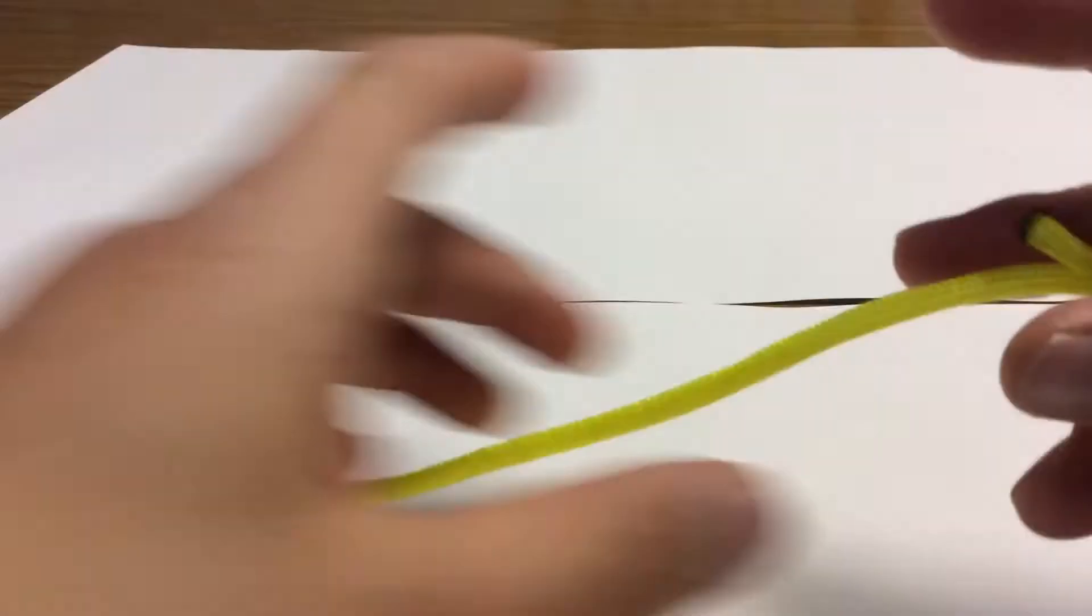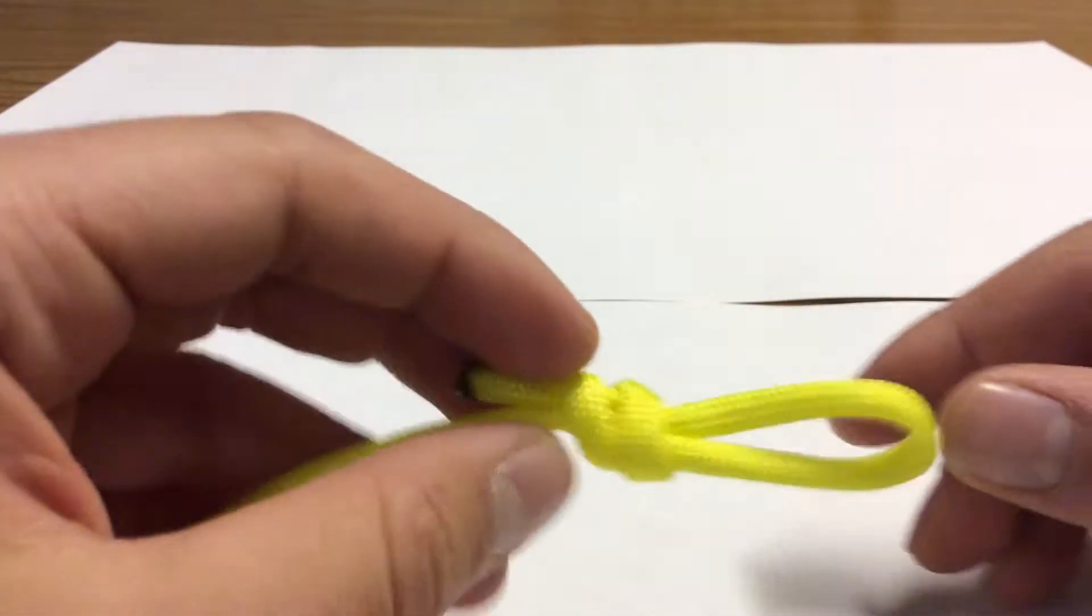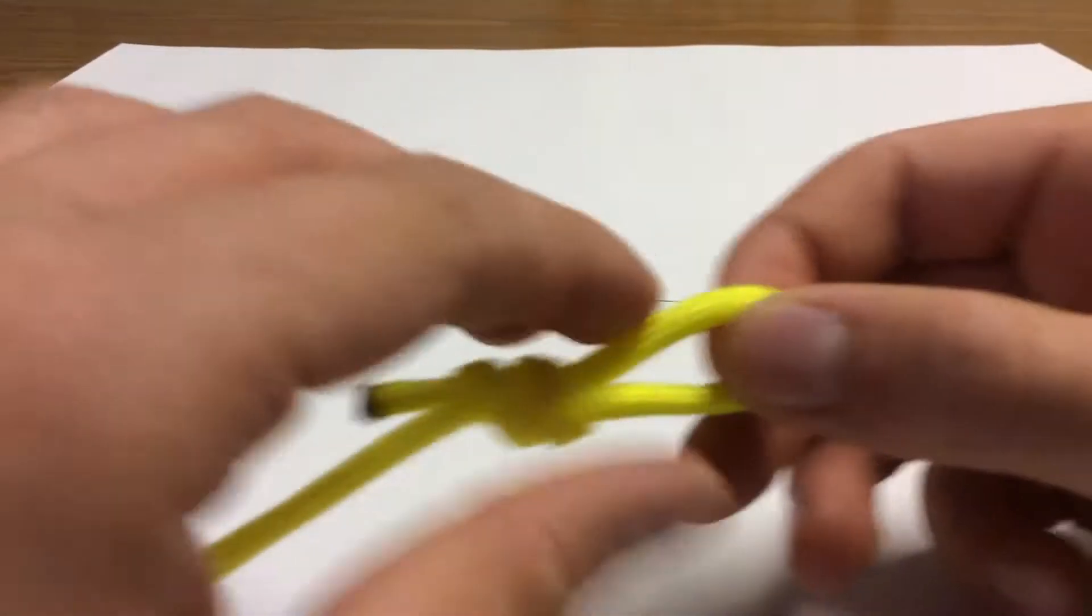So, let's start on this end. First of all, as you can see, I just did the regular loop and then knot here. And that's just the basic knot right there.